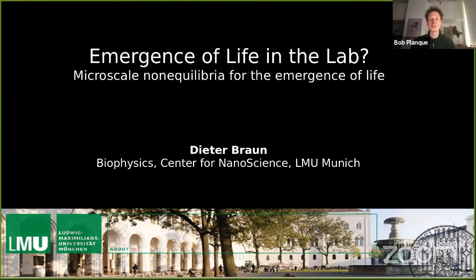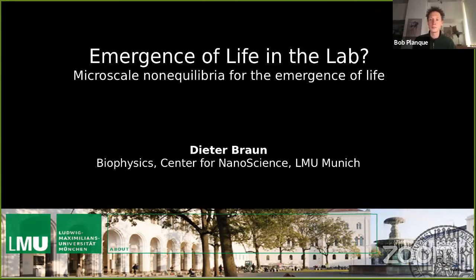I'm very happy to introduce Dieter Braun from the University of Munich. Dieter has a great group in Munich working on the origin of replication in environments that are out of thermodynamic equilibrium, such as heat or pH gradients. He is particularly interested in how natural selection can arise spontaneously in such environments. His talk is called: 'Emergence of Life in the Lab — Micro-scale Non-equilibria for the Emergence of Life.'